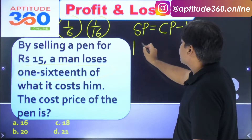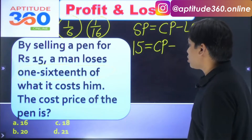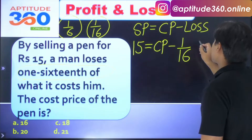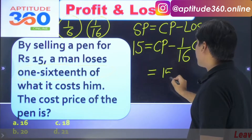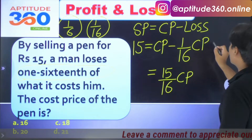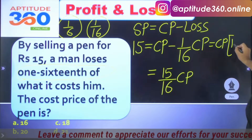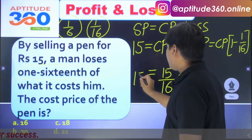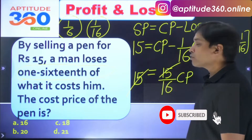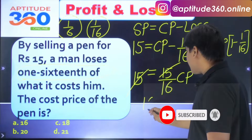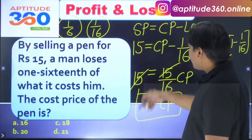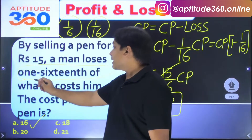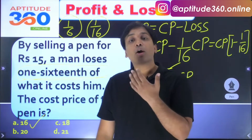Selling price is 15, which equals cost price minus 1/16 of cost price. Simplifying: 15 = (1 minus 1/16) × CP, which is 15/16 of CP. So 15/16 × CP = 15. The 15 cancels from both sides, and cost price comes out as 16 rupees.